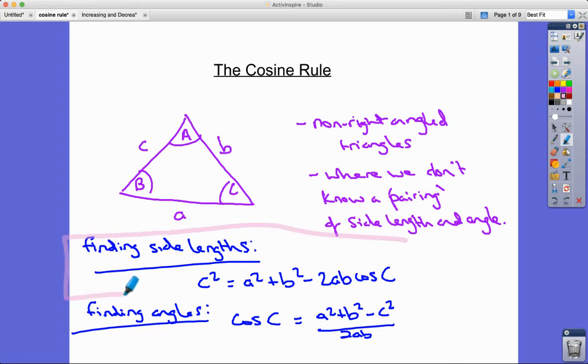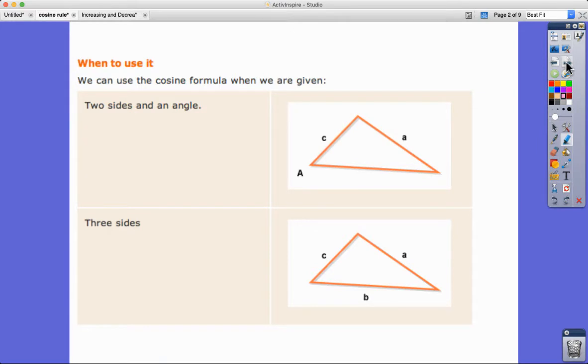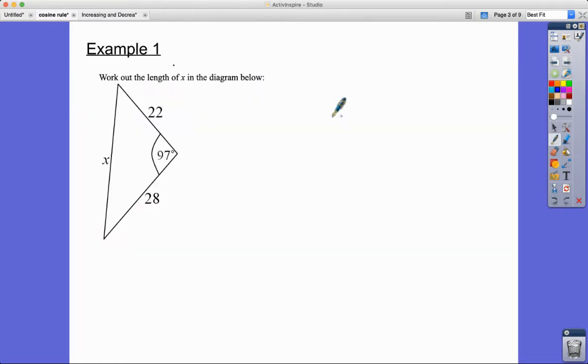I'll just put those in boxes so they stand out a bit. For me, I think it's easiest to know: use it when you don't have a pairing. That might be when you've got two sides and an angle, and you might be trying to find a third side. Or you might know three sides and you might be trying to find a particular angle. All right, so let's have a look at some examples.